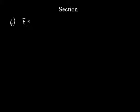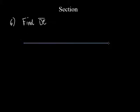It says find the length of line segment DE. Now watch what it says — D is between points C and E. Remember I said yesterday when I was going over the answers? I said draw the thing out. D is between C and E.